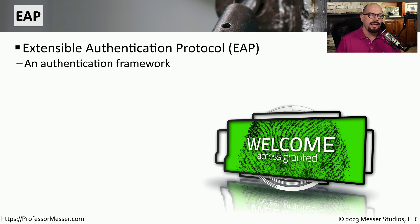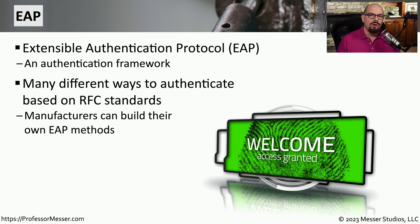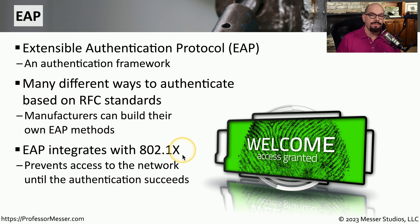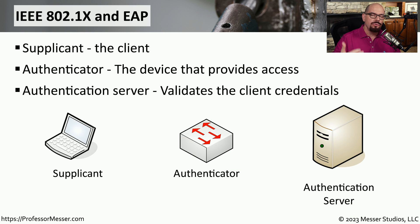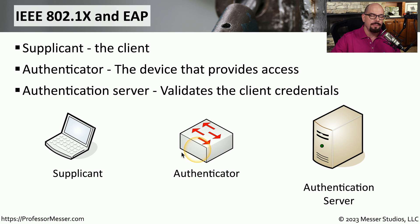One of the protocols used in the 802.1x process is EAP — Extensible Authentication Protocol. It's a framework that allows us to embed the authentication within this 802.1x process. EAP also has flexibility built into the standard, so manufacturers can customize this EAP process to meet their specific requirements. This 802.1x process commonly involves three different services, which may be on three different devices: the supplicant (that's you trying to log into the network), the authenticator (the device you're first connecting to), and the authentication server, or AAA server, on the back end.